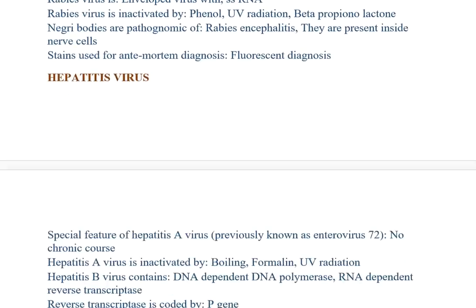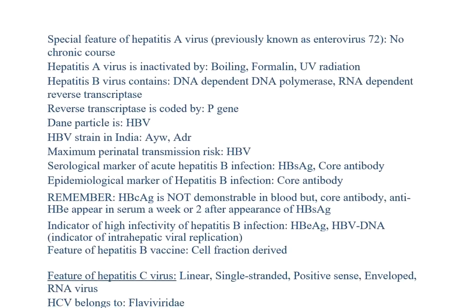Hepatitis A virus: previously known as enterovirus 72. Special feature: it has no chronic course. Hepatitis A virus is inactivated by boiling, formalin, and UV radiation. Hepatitis B virus contains DNA-dependent DNA polymerase and RNA-dependent reverse transcriptase; reverse transcriptase is coded by the P gene. Dane particle is HBV. HBV strain in India is ayw and adr. Maximum perinatal transmission occurs with HBV.